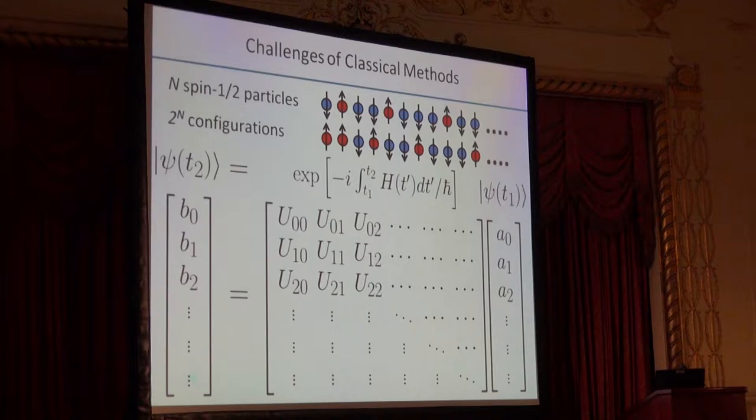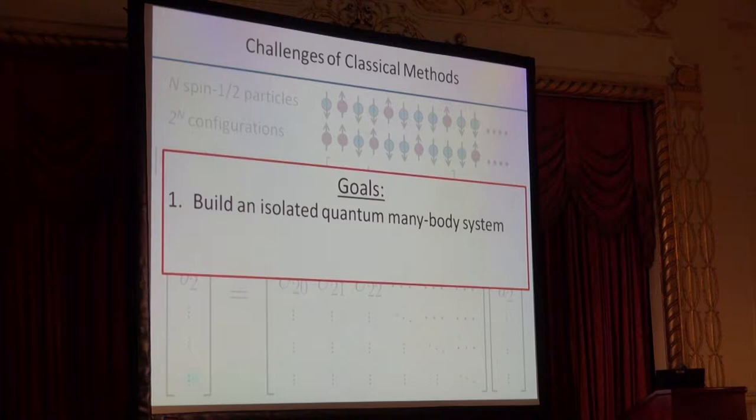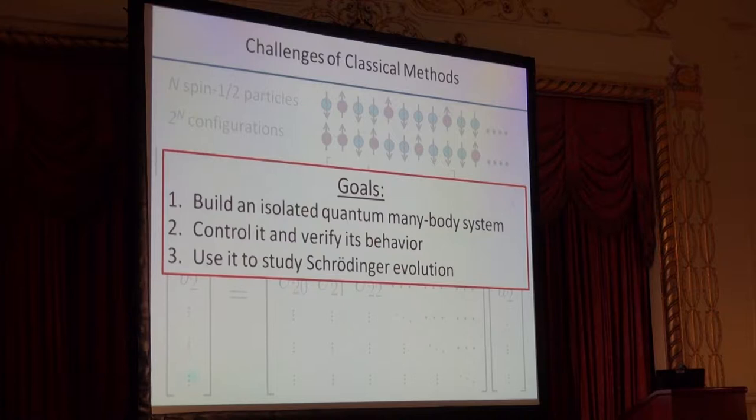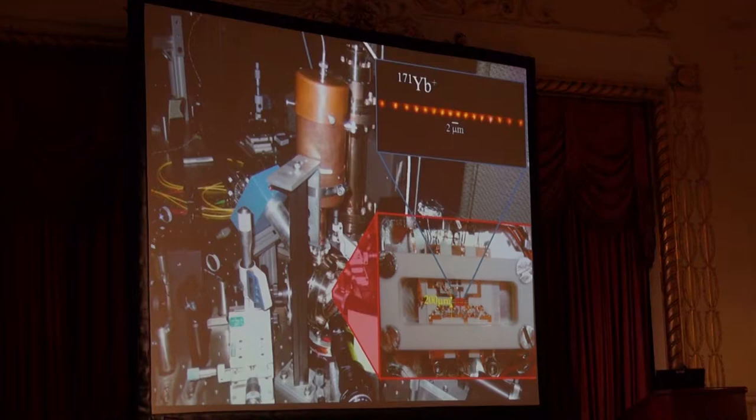This gives us a roadmap for building our experiments along with an outline for this talk. We'll start by telling you how we actually go about building an isolated quantum many-body system in our lab, what we do to control it and verify it's working as we expect, and finally how we can use it to study dynamics and evolution under the Schrodinger equation.